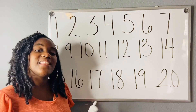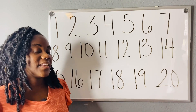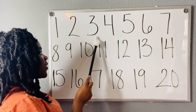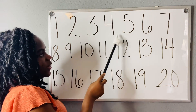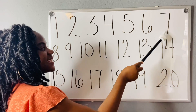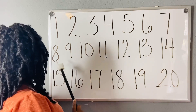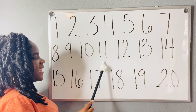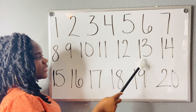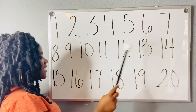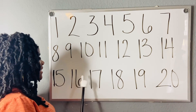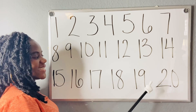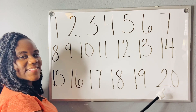So now let's count numbers 1 to 20. 1, 2, 3, 4, 5, 6, 7, 8, 9, 10, 11, 12, 13, 14, 15, 16, 17, 18, 19, and 20.